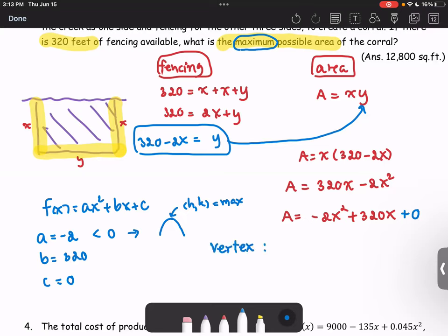From the formula h equals negative b over 2a. The b is 320. So negative 320 divided by 2 times a, or 2 times negative 2. We get 320 divided by 4. That turns out to be 80.